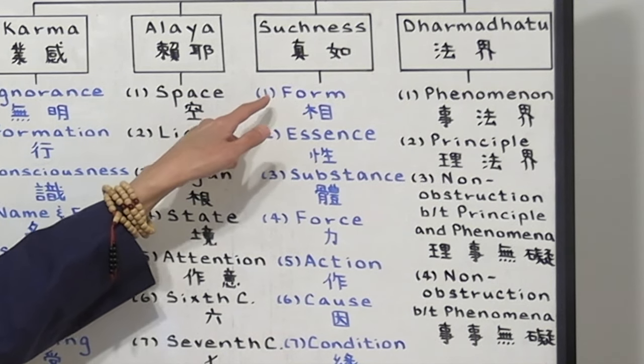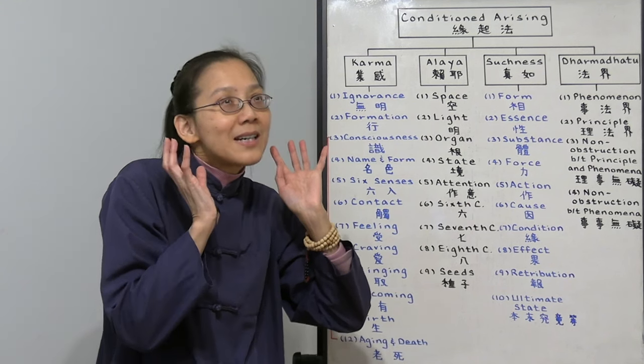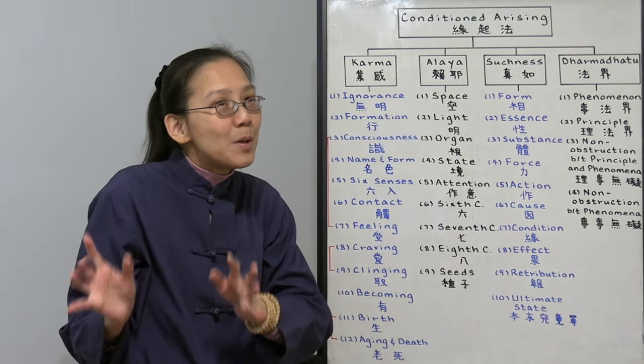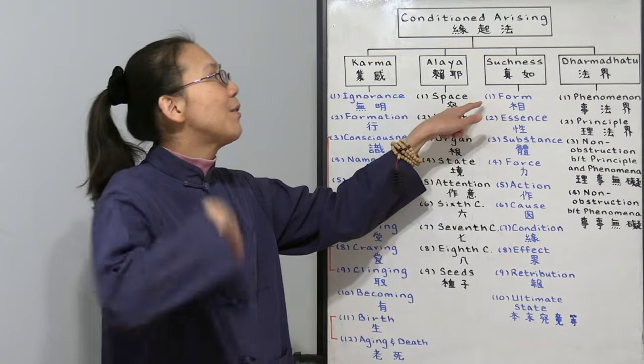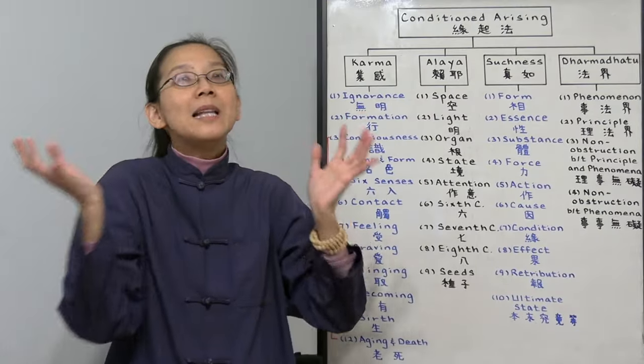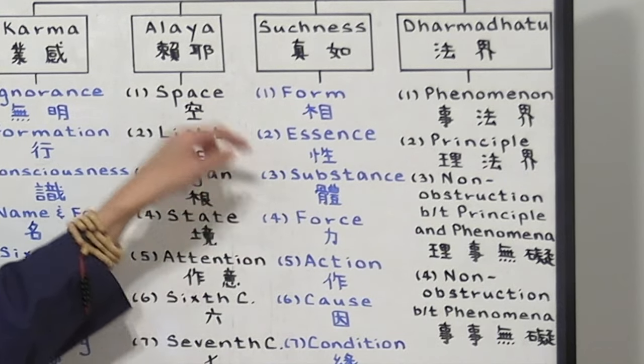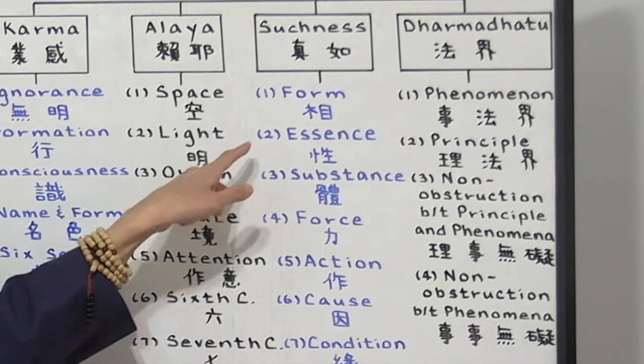So what are these ten features of every dharma realm? Number one, form, which is our outer appearance. Humans have human outer appearance. Animals have their animal appearance. That's their outer form. Number two, inner essence. Every human has different personality. Then we have our substance. That's the combination of the form and essence.